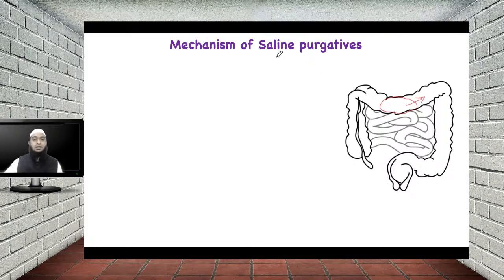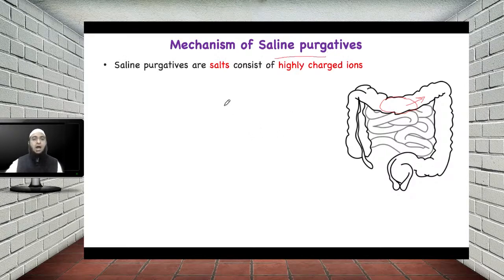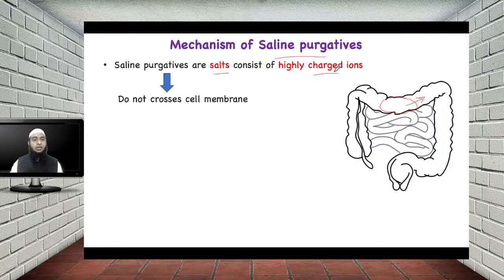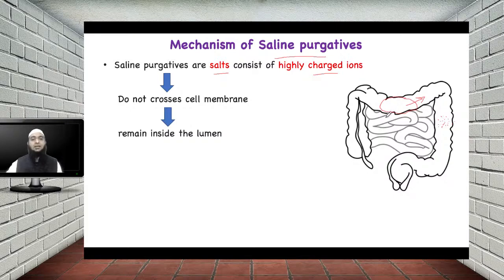In today's experiment, we will first see the mechanism of action of saline purgative. Saline purgatives are salts which consist of highly charged ions — they are salt in nature with highly charged ions. The second important thing is that they do not cross the cell membrane. Since they do not cross the cell membrane, when you take a dose of saline purgative and it is present in your intestine, it does not absorb into the blood circulation and remains inside the lumen.